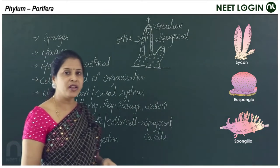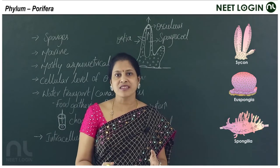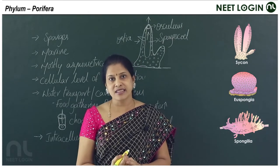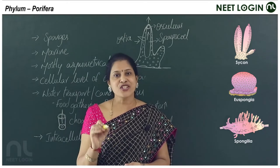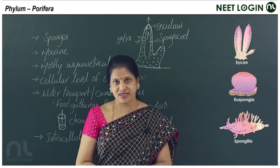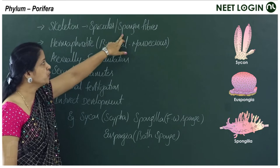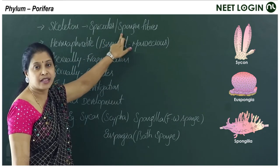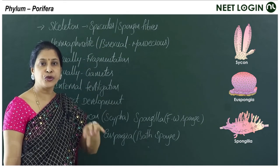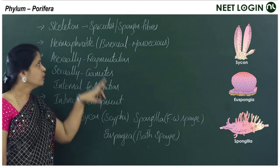In sponges, though they are multicellular, the cells are not organized to form tissues — they show functional isolation. The cells perform different functions. The body of poriferans is supported by a skeleton made up of spicules or spongin fibers. These protein fibers and spicules constitute the skeleton, providing support and protection.